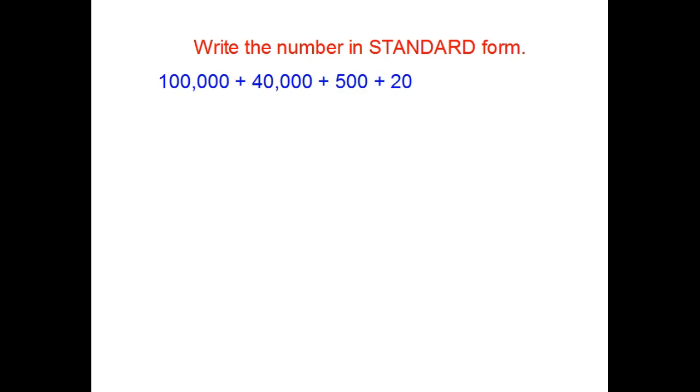Stop the video when you try this one out. Here we go. 6 digit number. 1 in the hundred thousands place. 4 in the ten thousands place. 5 in the hundreds place. 2 in the tens. And, everybody else is a zero. Because, we need those placeholders in there. 140,520.